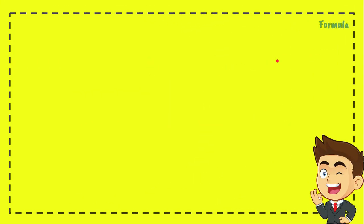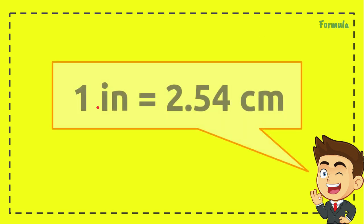This is the very first step. This is the formula that we need to use in order to solve the problem: one inch equals 2.54 centimeters. You can call it the conversion factor as well. We are going to use it in the next step.